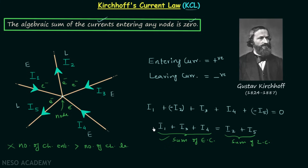Similarly, if the number of charges entering is less than the number leaving, the node would be generating charge, which is also not possible according to the law of conservation of charge. Therefore, the only valid scenario is that the number of charges entering equals the number of charges leaving. Since the movement of charge is current, the sum of entering currents equals the sum of leaving currents, implying the algebraic sum of currents is zero.